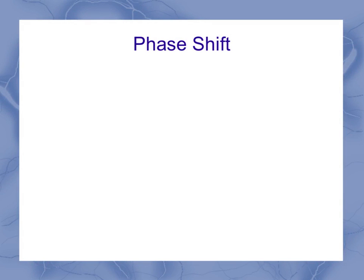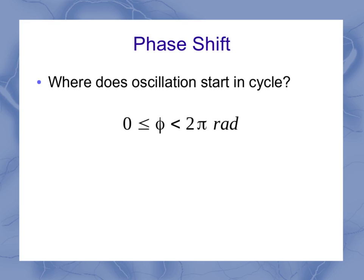So for phase shift, what is that? Well, it answers the question: where does the oscillation start in the cycle? And it's always going to be between 0 and 2π radians. Now if the phase is equal to 0 radians, that means that we're starting at our maximum displacement. That's where we say the standard cycle would start.